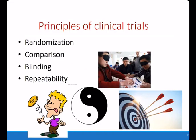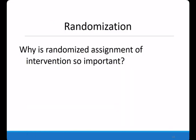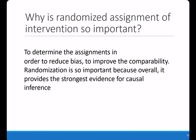There are four major principles of the clinical trial. The first is randomization. Randomization is the key feature of the clinical trial. It determines the assignment of intervention in order to reduce bias, improve comparability, and overall provides the strongest evidence for causal inference.